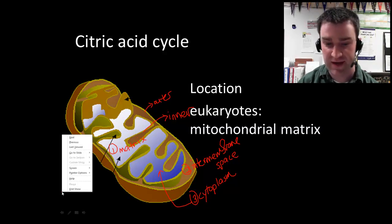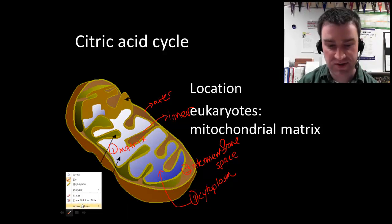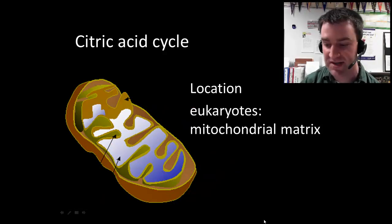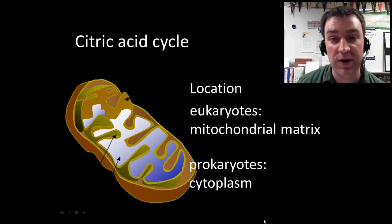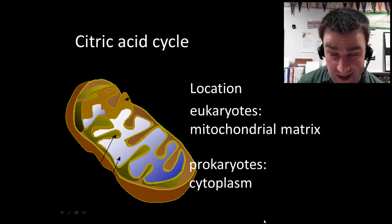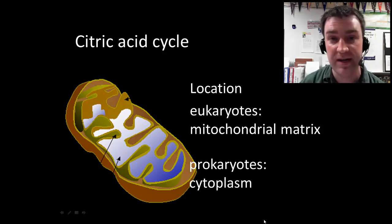Here's just a summary of that. In eukaryotes, the citric acid cycle is taking place inside the mitochondrial matrix. Prokaryotes can do respiration too, and they have all of the enzymes that the eukaryotes have for this process. They just don't have mitochondrial organelles or any membrane-bound organelle. So they just have these enzymes inside the cytoplasm.